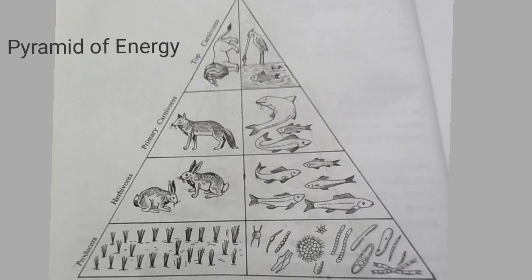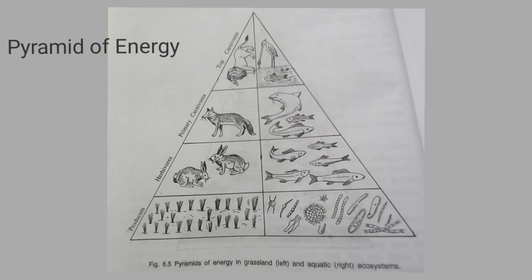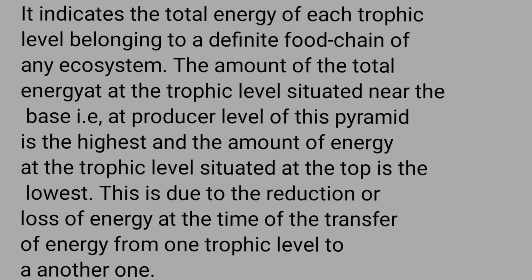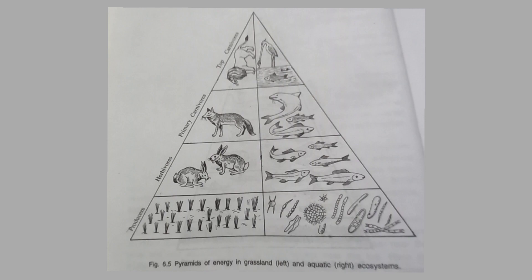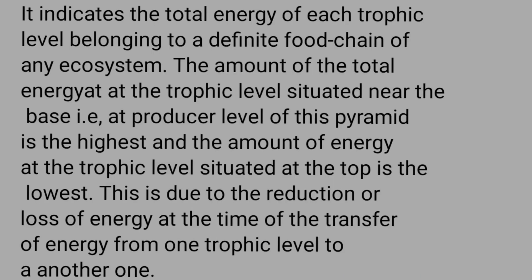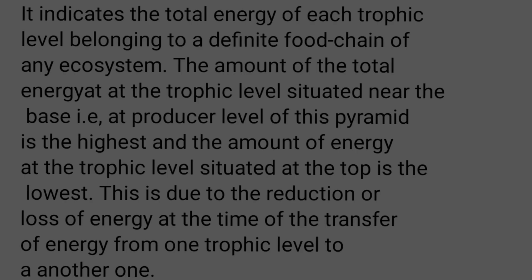Next is the pyramid of energy. It indicates the total energy of each trophic level belonging to a definite food chain of any ecosystem. The amount of total energy at the trophic level situated near the base, that is at the producer level, is the highest.